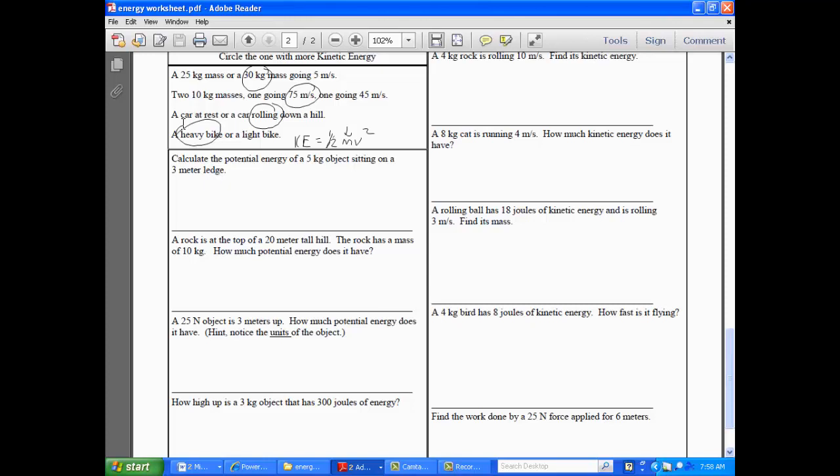All right. Let's look at some of these math problems. So it says calculate the potential energy of a 5 kilogram object sitting on a 3 meter ledge. Potential energy equals mass times gravity times height. So we're given everything we need. Mass is 5. I'm going to use 10 for gravity to make the math easier. Times 3. So, therefore, 5 times 10 is 50. 50 times 3 is 150 joules of potential energy. All right. Any questions with that one?